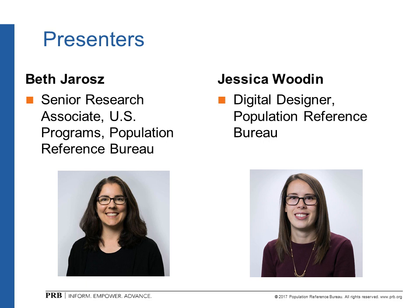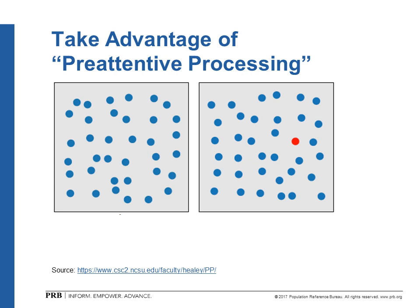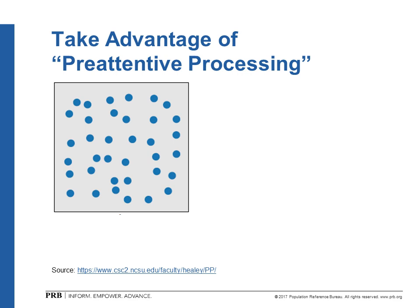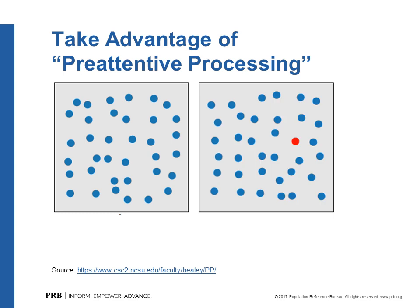Good morning or good afternoon, everyone, depending on where you are. We're going to be talking about communicating about data effectively, and in particular, we're going to focus on data visualization and infographics. Why do we want to do data visualization and infographics? In part, it's to take advantage of what's known as pre-attentive processing. If I asked you to count the number of blue dots within the gray square on the screen, you would have to spend some time and count them one by one. But if I asked you to count the number of red dots in this second square, it's really simple to see that there's only one. The color makes it stand out — that's pre-attentive processing. You don't even need to think about how many red dots. You just know the answer.